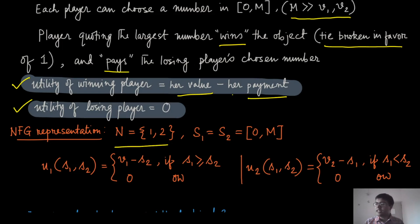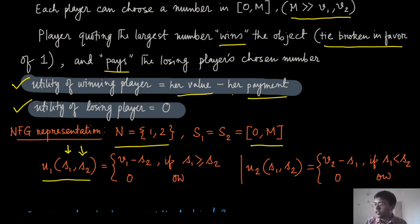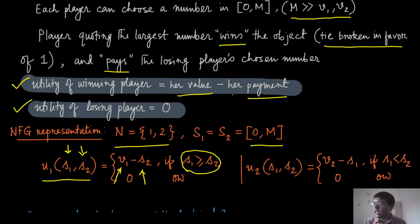We now formally represent this game in normal form. There are two players. Each player's strategy set is the interval [0, m]. The utility for Player 1 when Player 1 chooses s1 and Player 2 chooses s2 is: if s1 ≥ s2, Player 1 wins and gets utility v1 − s2; otherwise Player 1's utility is 0. Similarly, Player 2 wins when s1 < s2 and gets utility v2 − s1; otherwise it is 0.